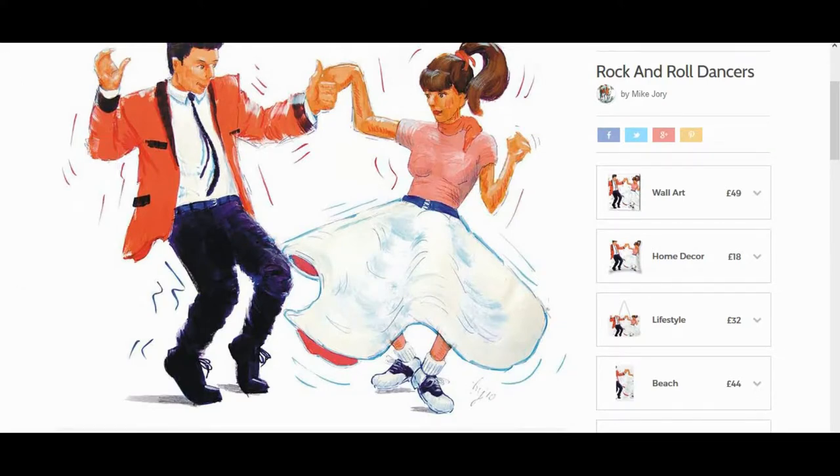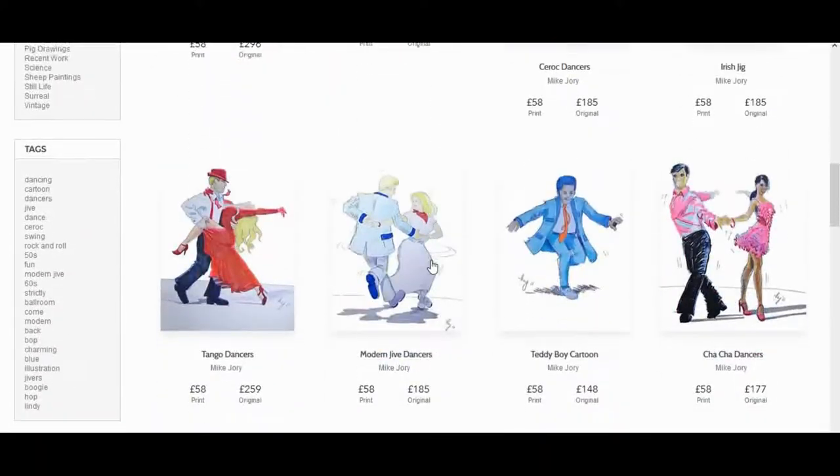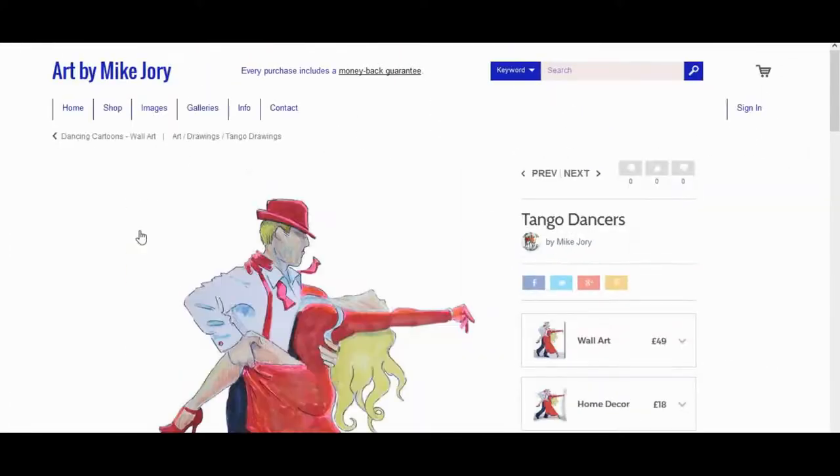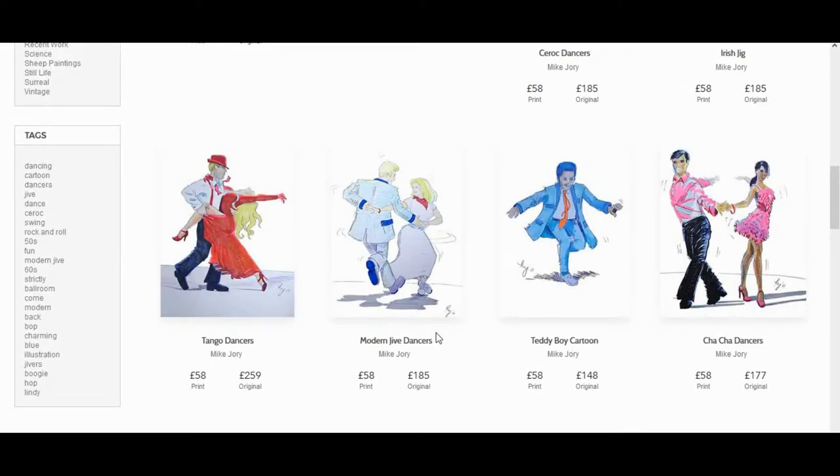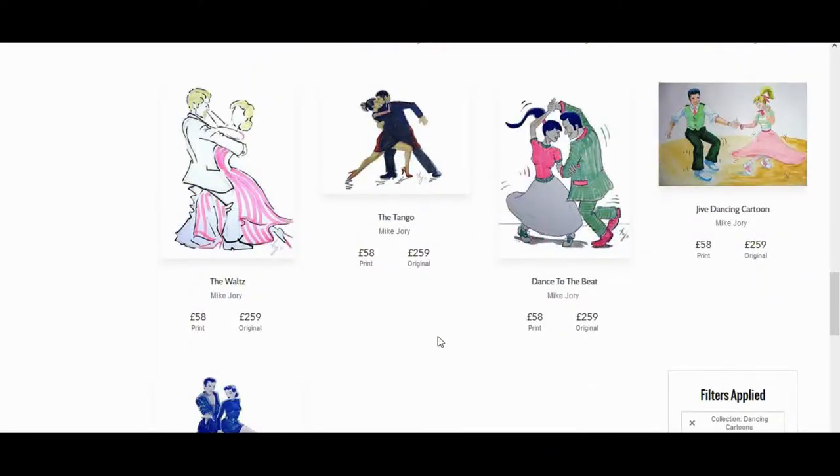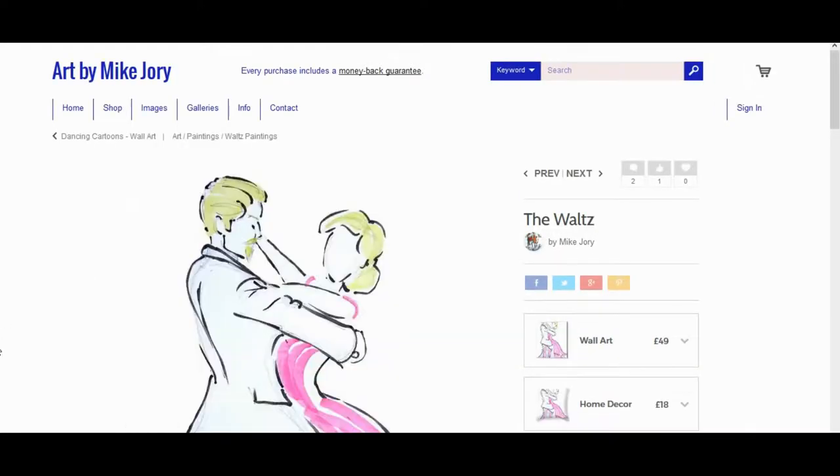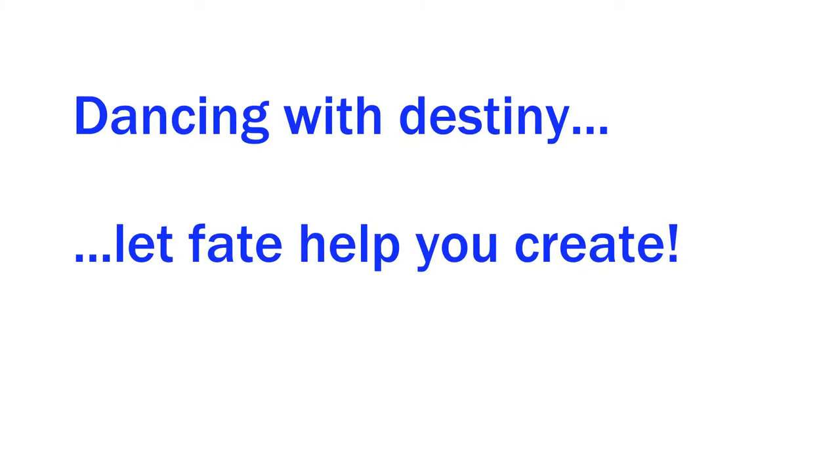So what I'm going to do is take all the different colours of Sharpie markers that I have and program them into an electronic Wheel of Fortune. I'll put the link to that Wheel of Fortune website in the description below the video if you want to try it out yourself. And then I'm going to use the Wheel of Fortune to help me decide which colours to use for this drawing. So I'm calling this one Dancing with Destiny and letting Fate help you create.